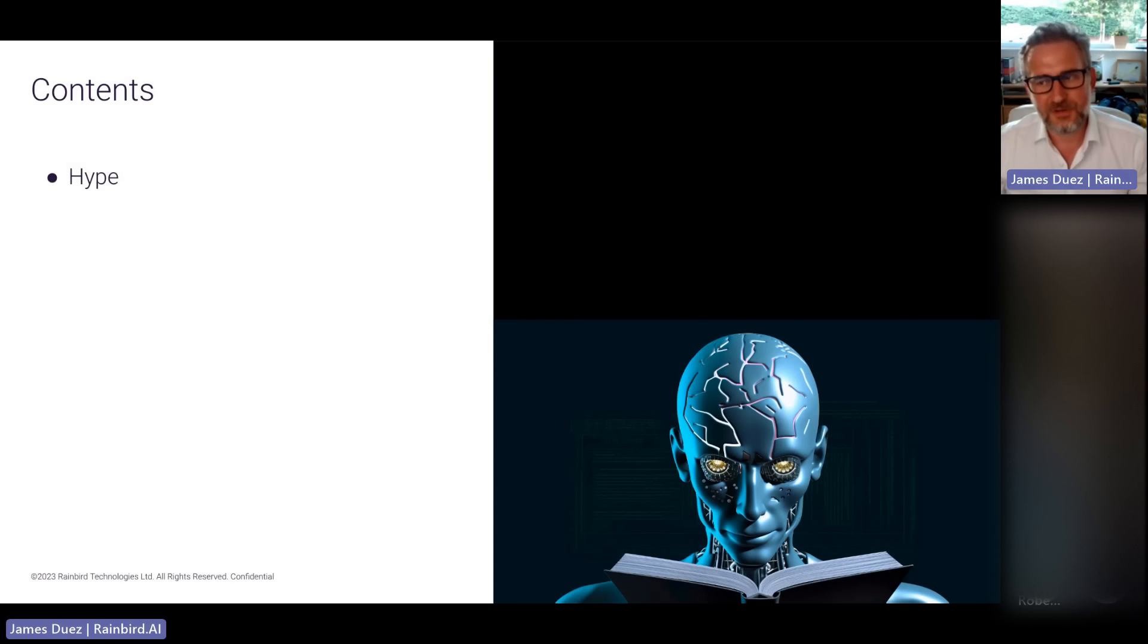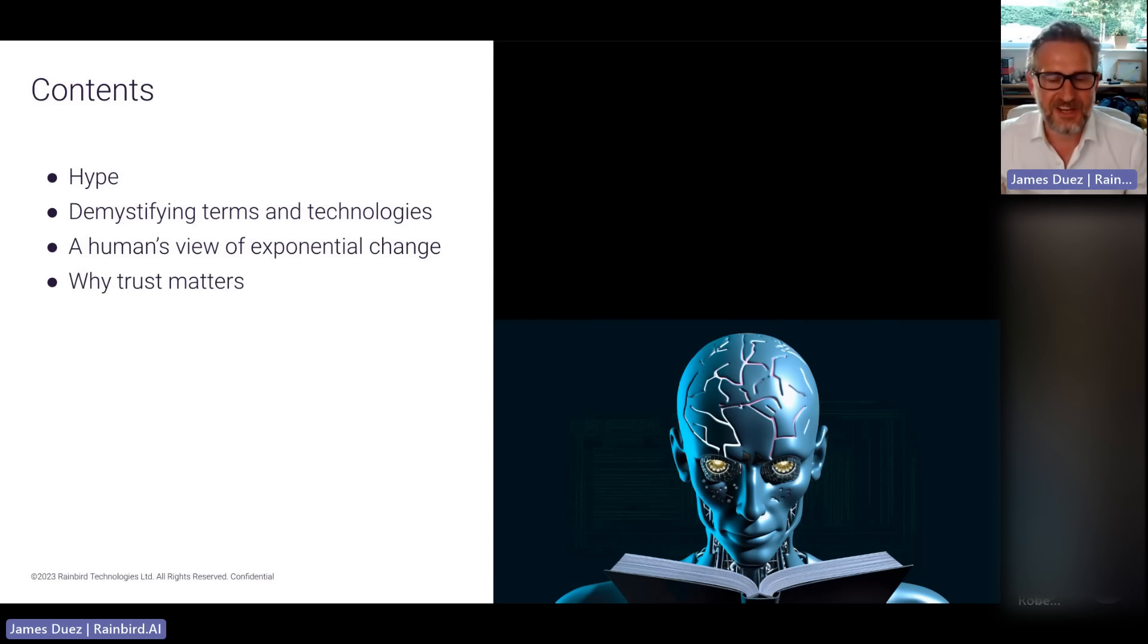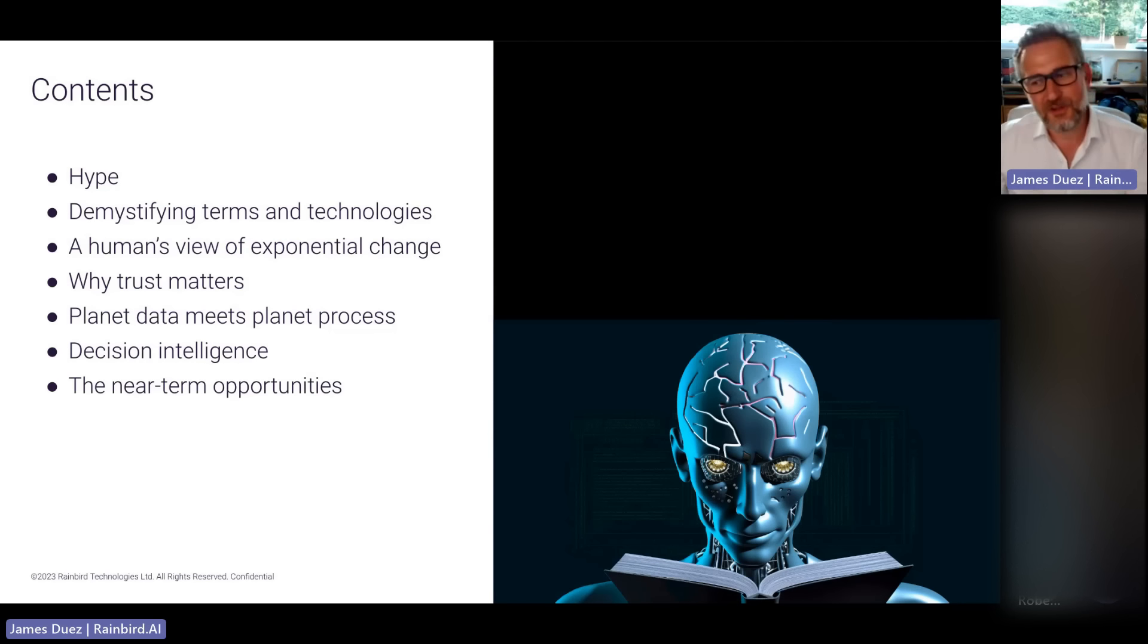So what are we going to cover? We're going to talk a little bit about hype. I'm hoping to demystify some of the terms and the technologies for you and provide actually a human view of exponential change, why exponential change is something that's quite challenging for us as humans to visualize, why trust matters, why some of us are living on planet data while others have been living on planet process, and how these two worlds are coming together to form something called decision intelligence. We'll look at the opportunities. We'll look at some risks. I'll give you an example, and then we'll get into some Q&A.